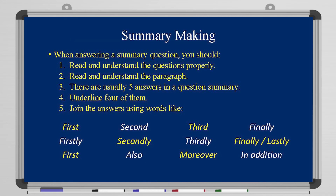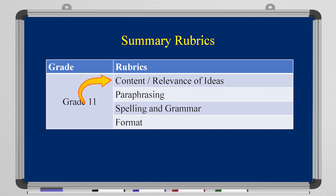Now let's look at the summary. When you have a passage and a question, answer that question using four of the answers given in the reading passage. There are usually five answers, so you underline four, then join them with words like first, firstly, second, third, finally, also, moreover, in addition. I'm looking for content and relevance of ideas — summarize according to the passage only, not from outside. Even if outside information is right, it will be marked wrong. Paraphrase as much as you can, make sure spelling and grammar are correct, and write in paragraph format, not bullet points.